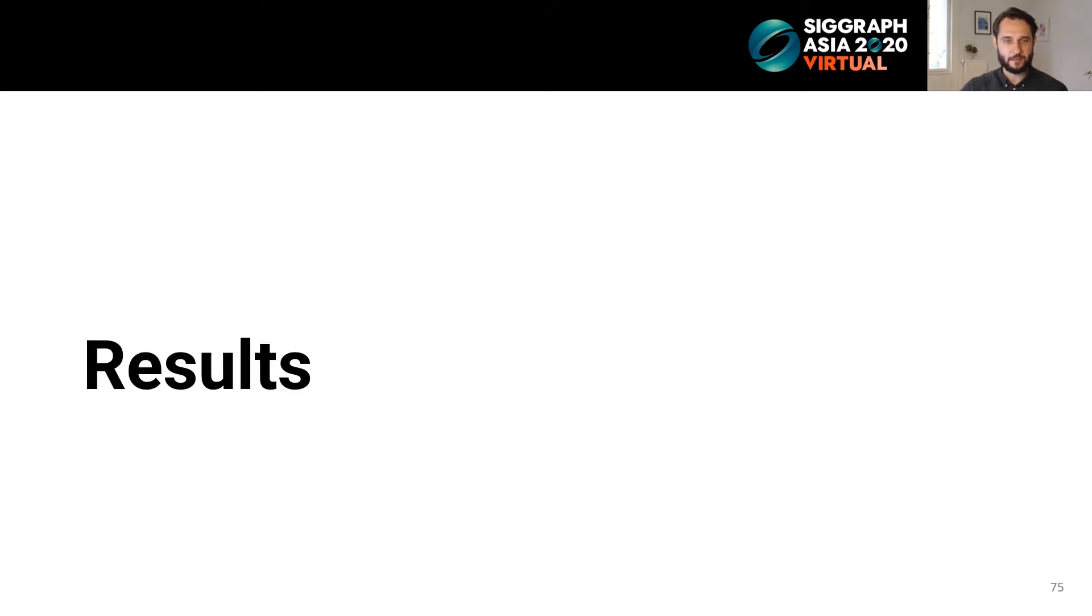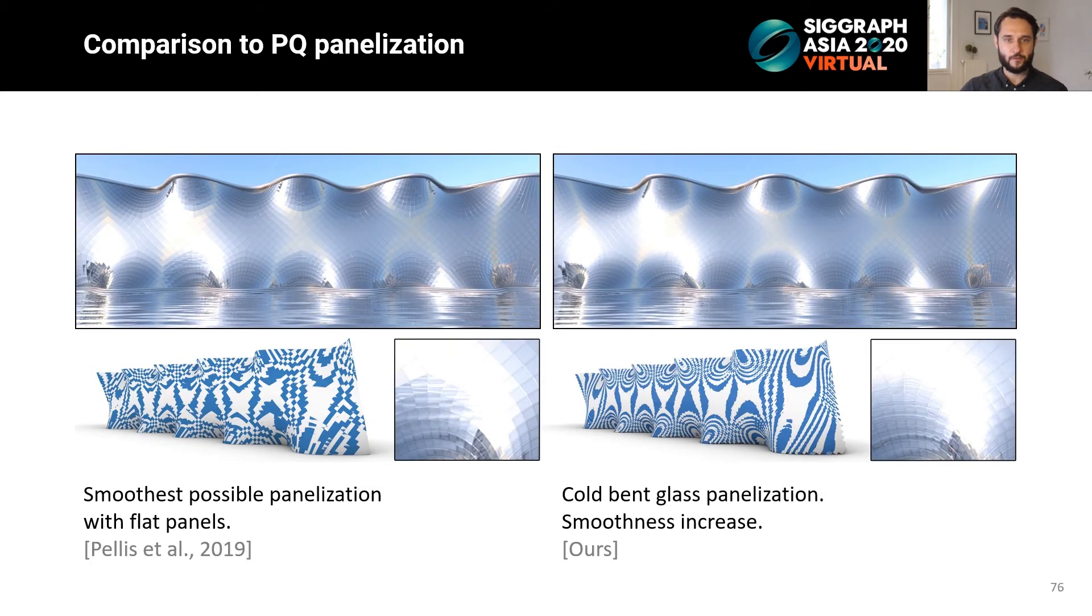We will dedicate this part to go through some of the designs we achieved with our method. Let us begin with an interesting facade design to compare the visual quality of a cold-bend glass panelization on the right to a planar quad mesh that follows the principal curvature network on the left. It was shown by Pellis et al. that such a PQ mesh is visually the smoothest possible with planar quads. From the detail in the zebra patterns, you can see how the cold-bend glass panelization increases the visual smoothness while preserving the underlying mesh layout.